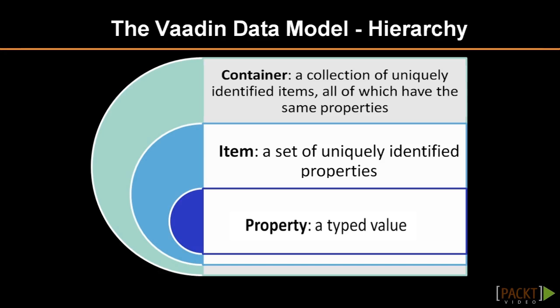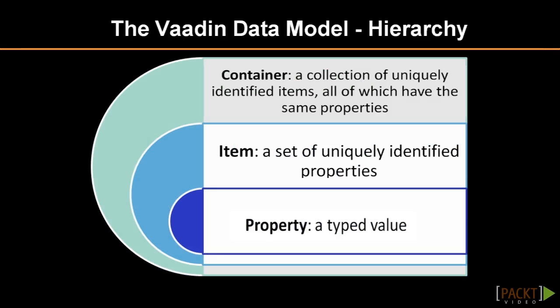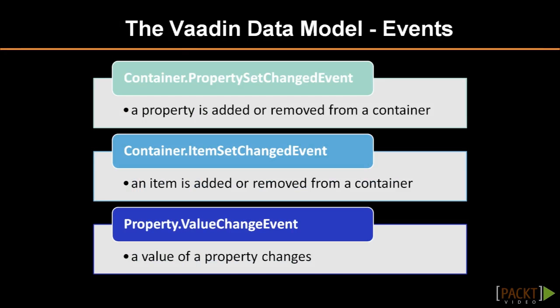At the most general level, we have containers. They contain items, which group properties. A property is just a typed value pair. In most cases, the value can be changed, and doing so will trigger a property value change event. An item is a collection of properties, where each property is uniquely identified with a property ID. Finally, a container associates items and their corresponding item IDs. Moreover, all items in the container contain the same property types and property IDs. Whenever an item is added to or removed from a container, an item set change event is broadcasted.